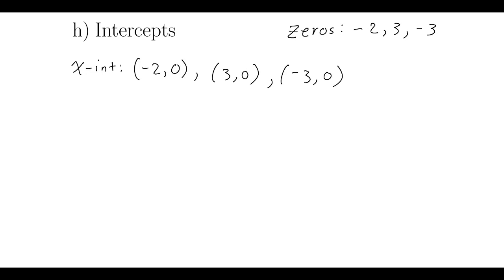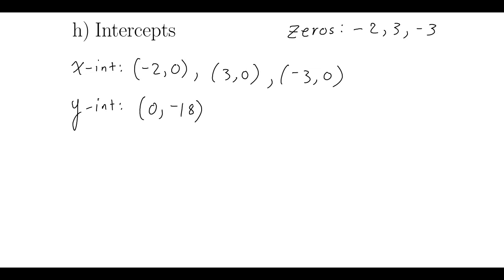The y-intercept is going to be zero, comma, the constant term, which is negative 18. There's our intercepts.